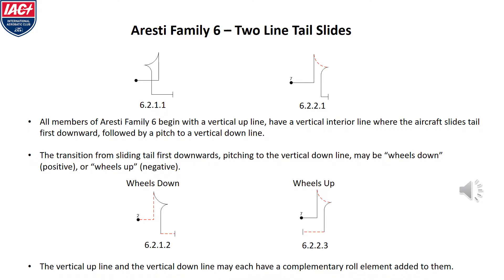Aresti Family 6 are two-line tail slides. All members of Family 6 begin with a vertical up line, have a vertical interior line where the airplane slides tail-first and downwards, followed by a pitch to a vertical down line. The transition from sliding tail-first downwards and pitching to the vertical down line may be wheels down (positive) or wheels up (negative). The vertical up line and the vertical down line may each have a complementary roll element added to them.